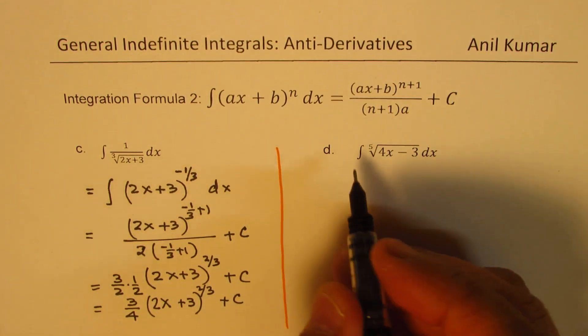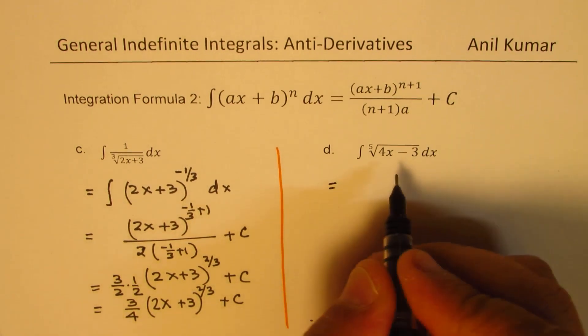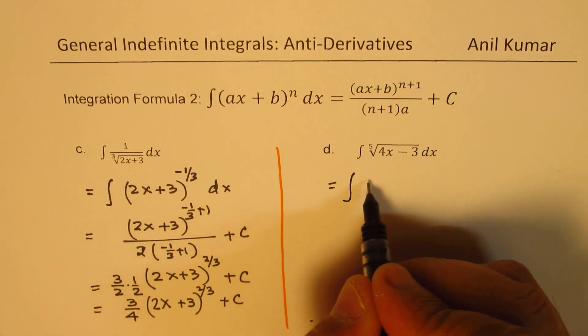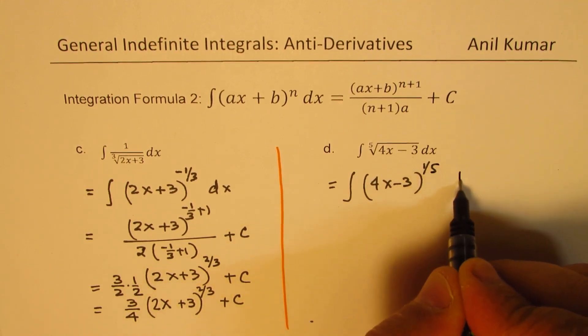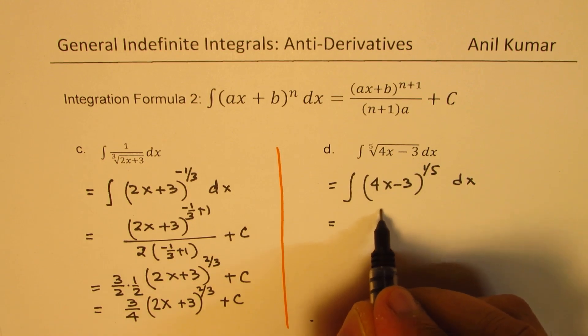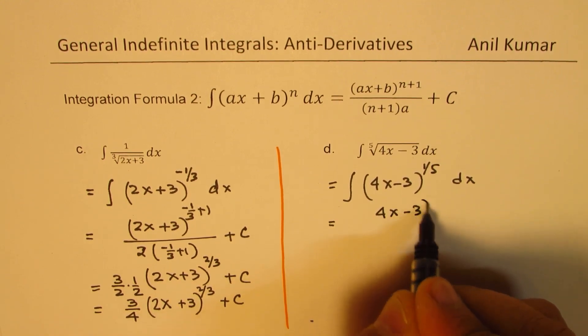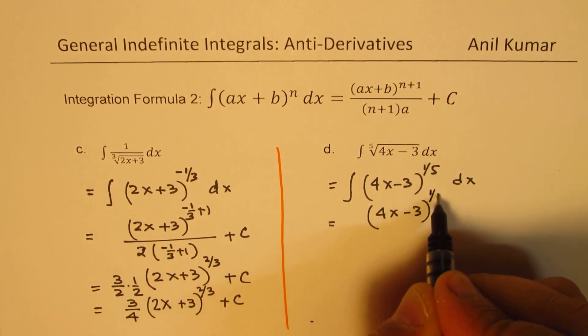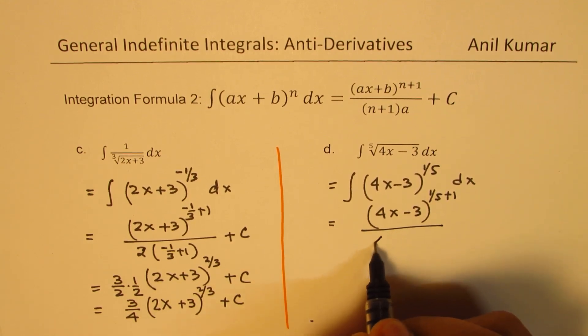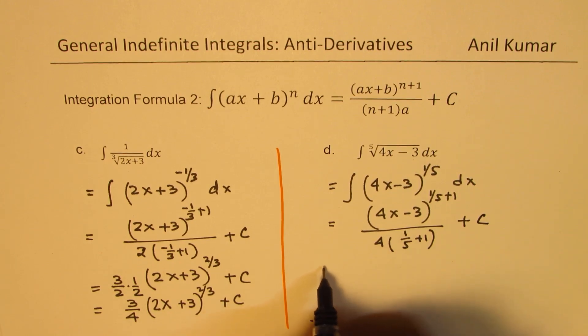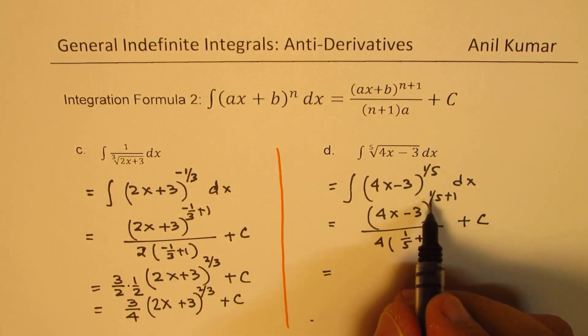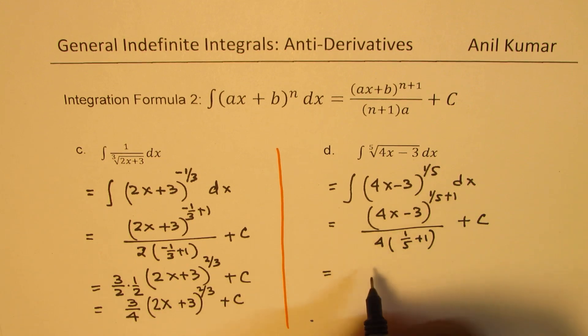The last one here is integral of 4x minus 3 to the power of 1 over 5. That gives you 4x minus 3 to the power of 1 over 5 plus 1 divided by, I'm writing 4 first, and then the power 1 over 5 plus 1, plus a constant C. That is equal to, if you add 1 to 1 over 5, you get 6 over 5.